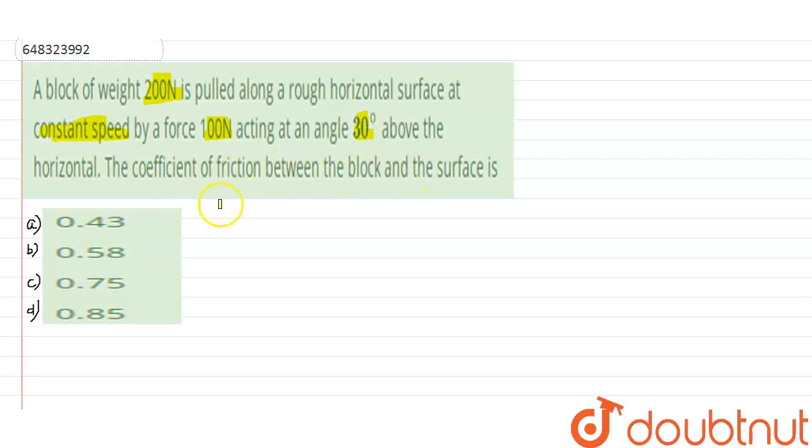The coefficient of friction between the block and the surface is: options are 0.43, 0.58, 0.75, 0.85. So first of all, we have to construct a figure so that everything will be clear for us to understand.